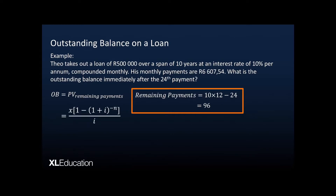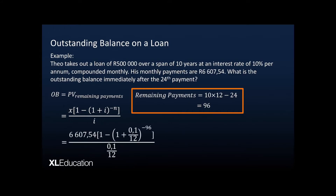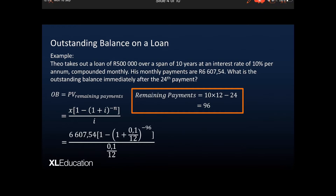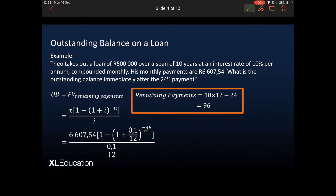We then use our present value formula for the remaining payments. n is equal to 96, because there are 96 payments still remaining. Our x, the monthly payments, remain the same, and our interest rate i also remains the same. We find that the outstanding balance on the loan after the 24th payment is 435,446 rand and 72 cents.